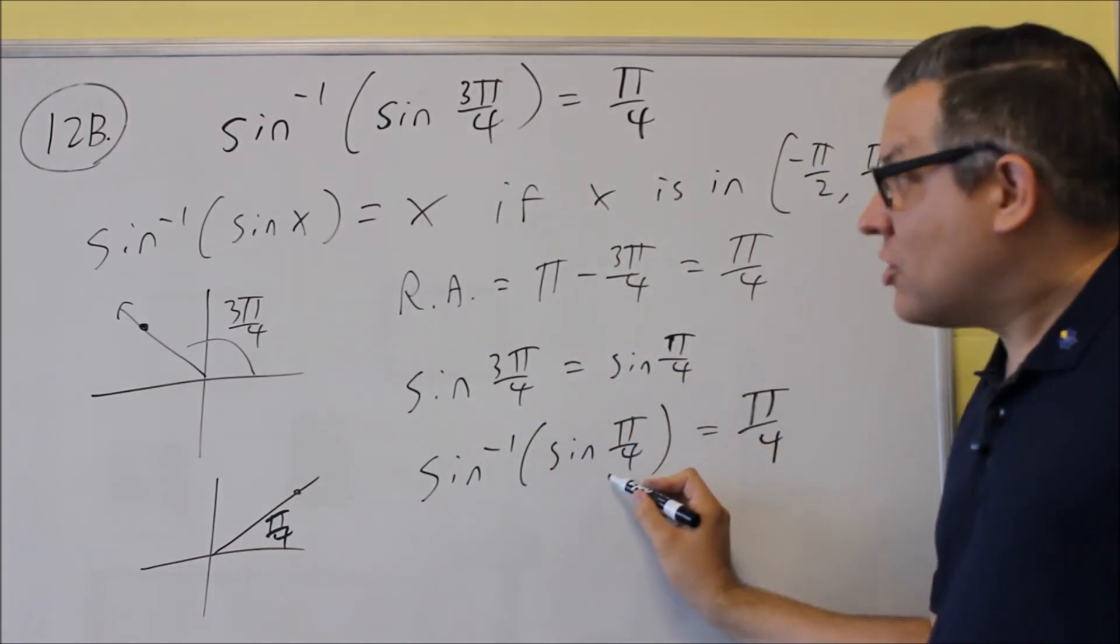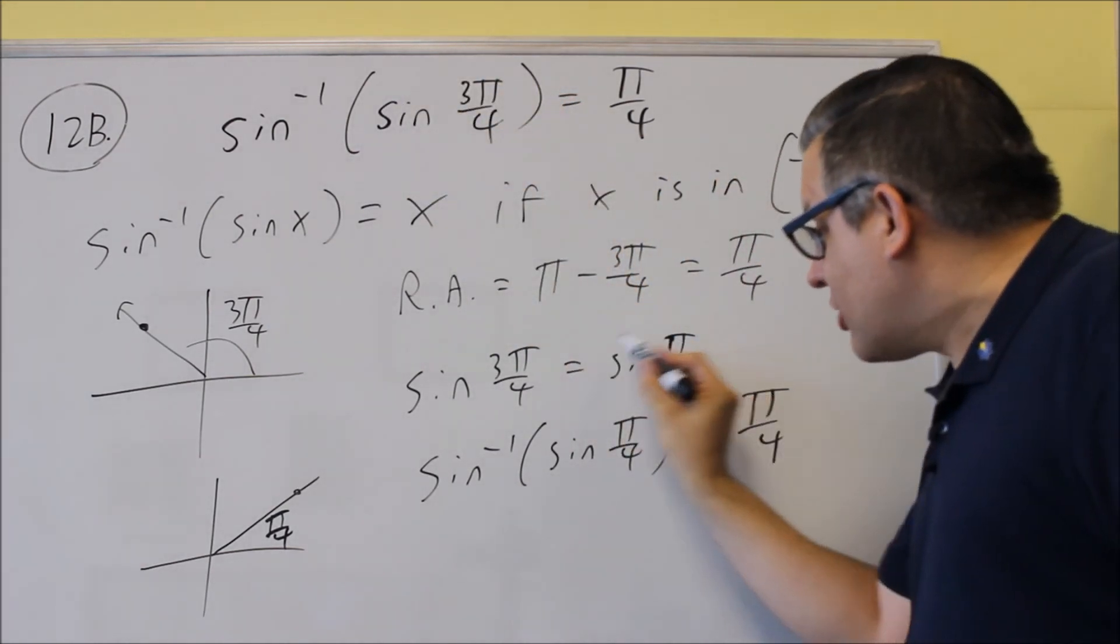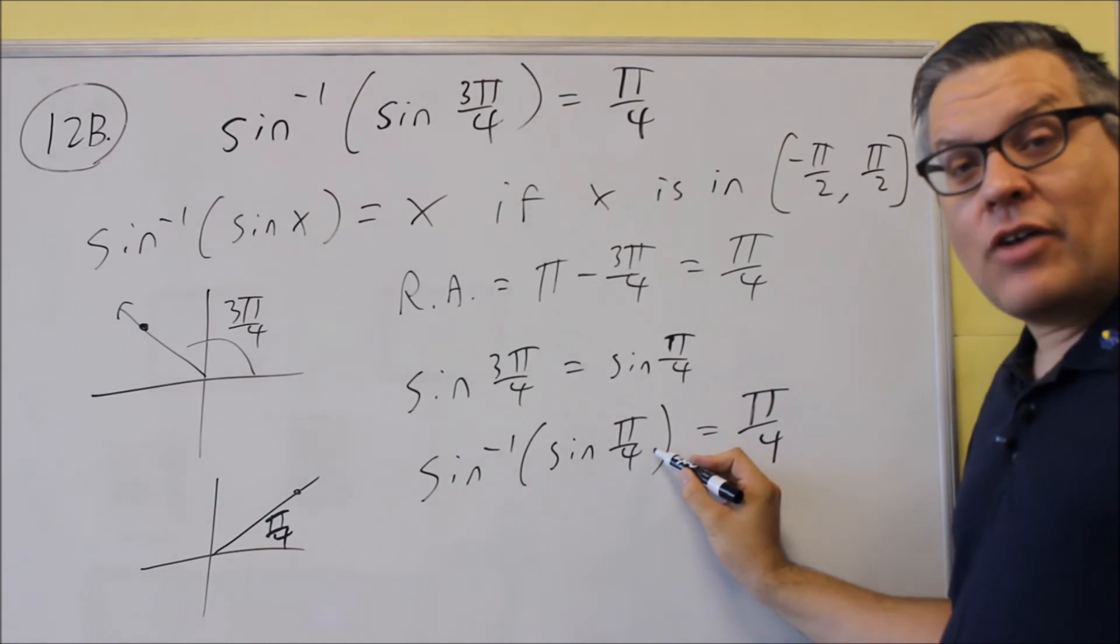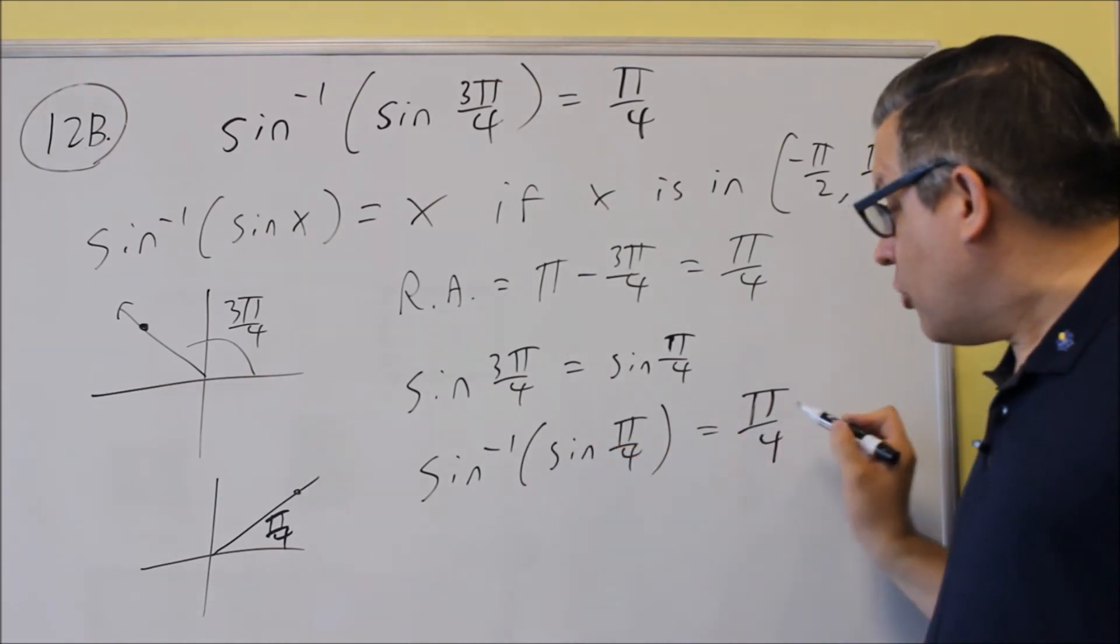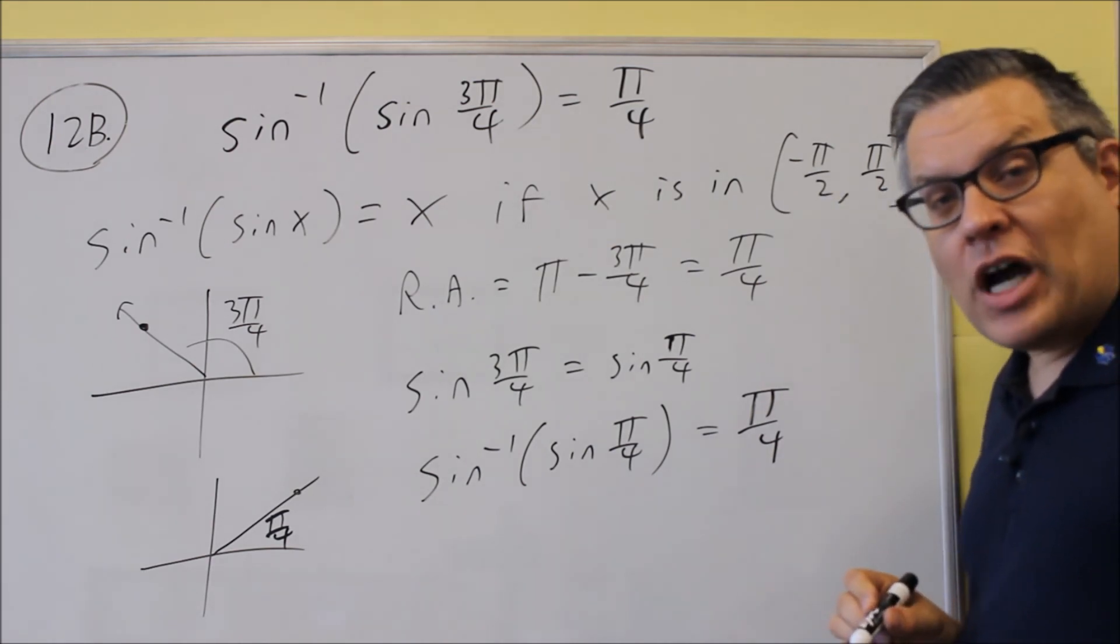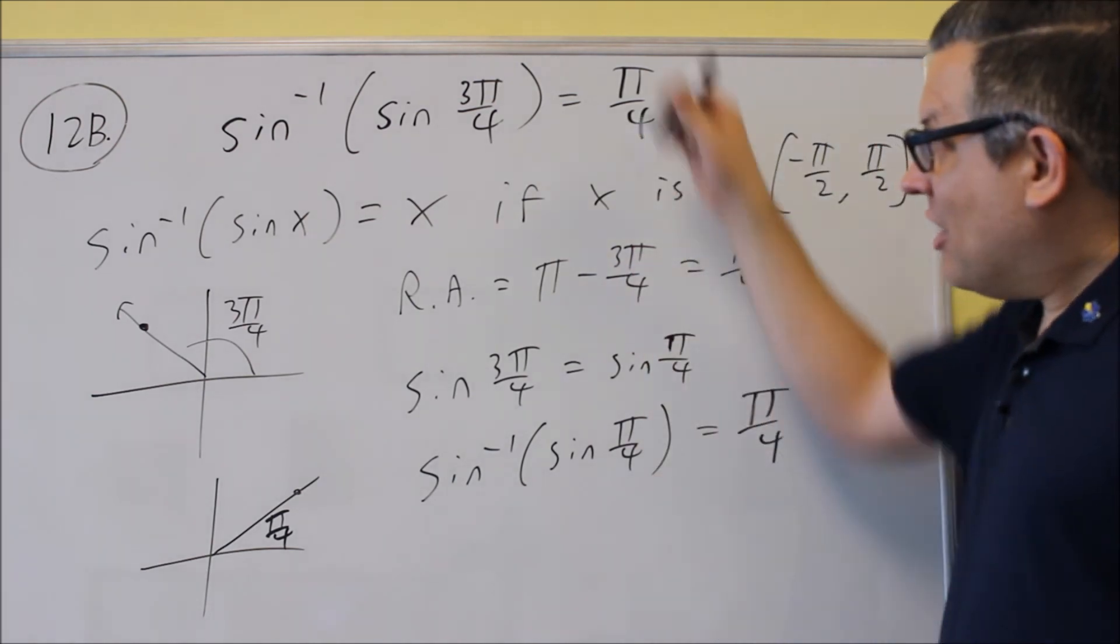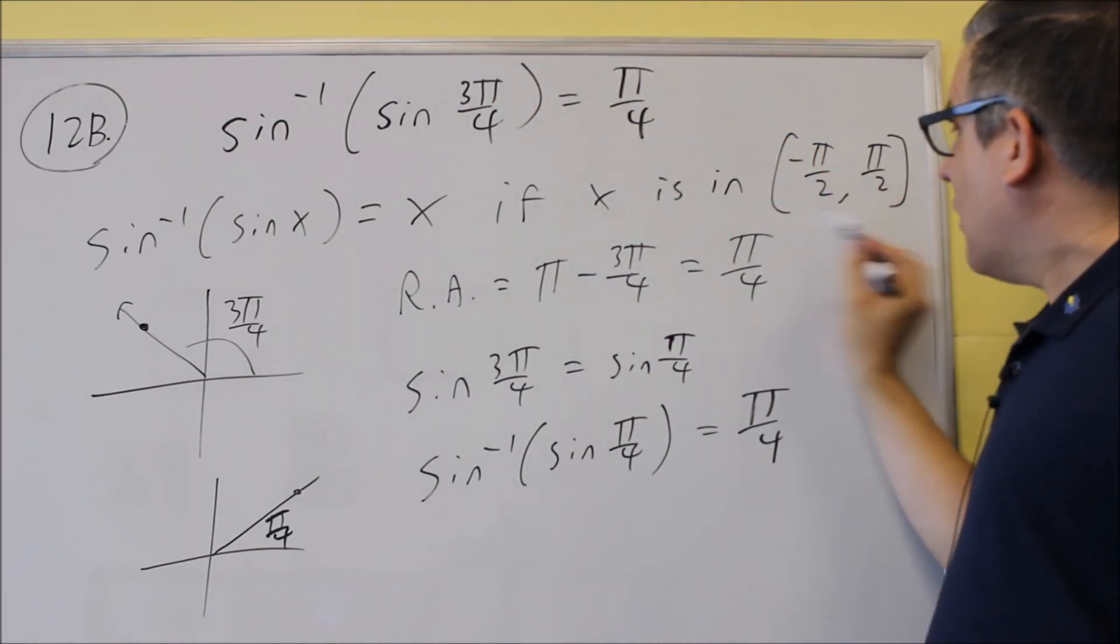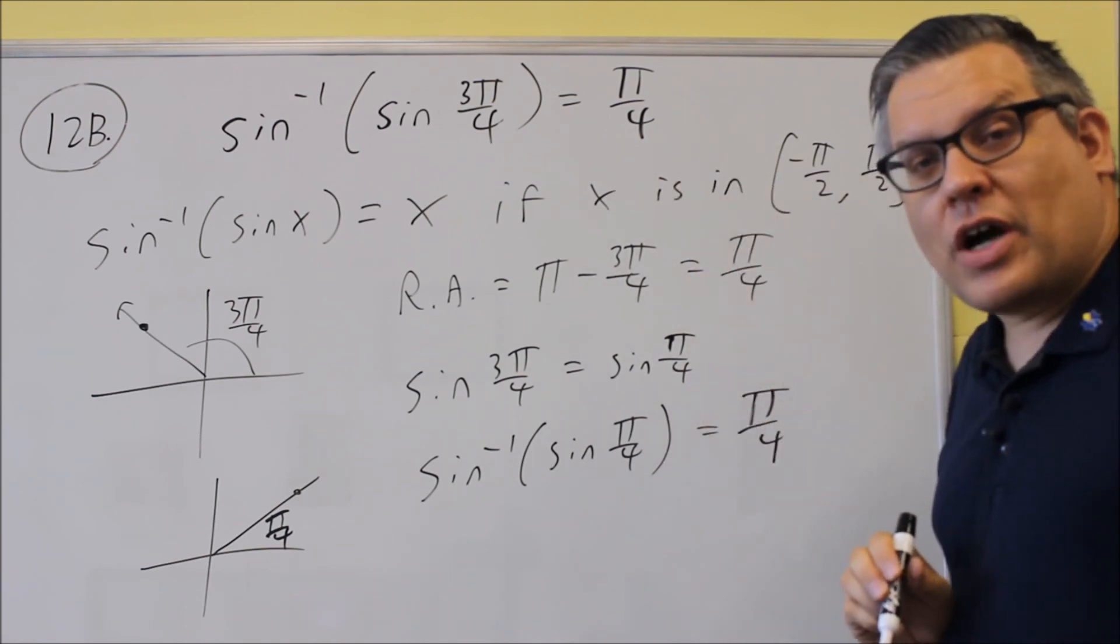And if we put that into our expression here, we take out the sine 3π over 4, replace it with sine of π over 4, then we know that those inverses are going to cancel out and we'll get π over 4 as the answer because π over 4 is between negative π over 2 and π over 2. You only have to do this process if the number inside here does not fall in that particular interval.